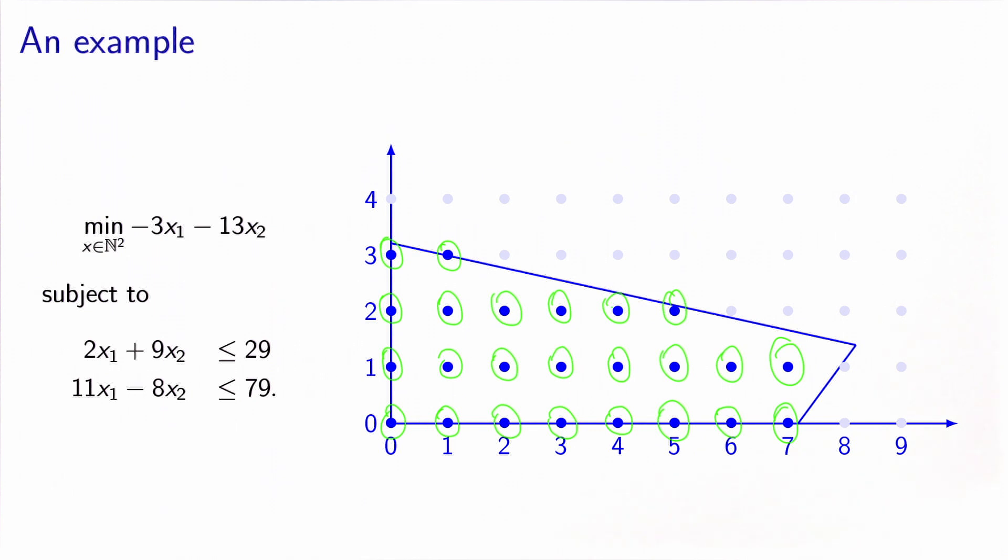Actually, one way to solve the problem would be by enumerating the solutions. So for all of these 24 points, I can calculate the objective function and then identify the one which is the best.